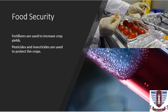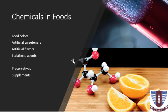Refrigeration systems for cold storage of vegetables and raw meat use polyurethane foams and the chemical properties of gases to preserve food for a longer time. There are many chemicals used in our foods — for example, food colors, artificial sweeteners, artificial flavors, stabilizing agents, preservatives, and supplements. Nutritional supplements include minerals, vitamins, and amino acids.